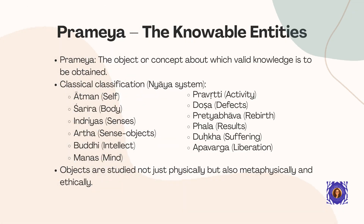Let's look deeper at prameya — the objects or concepts that can be known. In the Nyaya system, one of the six major schools of Indian philosophy, knowable entities are classified into twelve categories. These include atman (the self), sharira (the body), indriyas (the senses), artha (the sense objects), buddhi (intellect), manas (mind), pravritti (activity), dosha (defects), pretyabhava (rebirth), phala (results), dukha (sufferings), and finally apavarga (liberation). What's particularly interesting is that objects are studied not just in their physical aspects, but also in their metaphysical and ethical dimensions — giving a more holistic understanding of what is being studied.